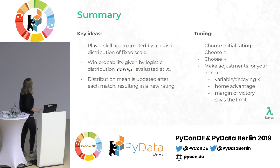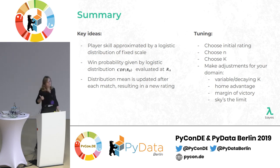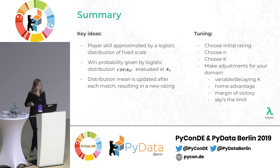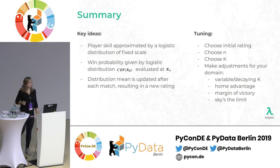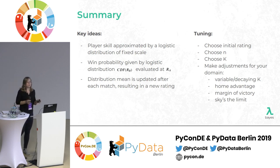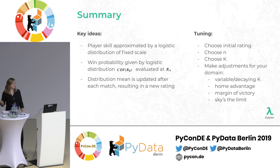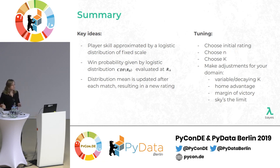In summary for ELO: player skill is approximated by a logistic distribution of fixed scale; win probability is given by the CDF of the logistic; and the distribution mean is updated after each match, giving your rating. To implement it, choose an initial rating, choose N, choose K, and make adjustments for your domain — for example, maybe the home team has an advantage and gets fewer points for winning, or you factor in margin of victory, or in chess you use piece color. Domain knowledge is the most important part.